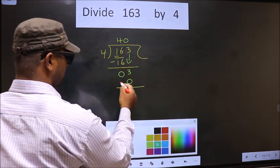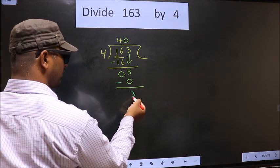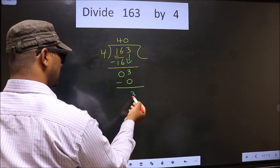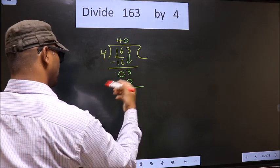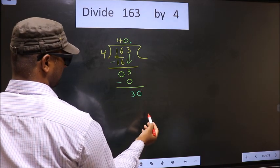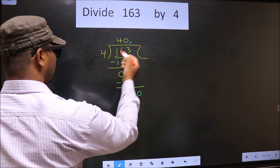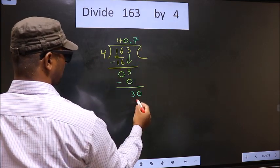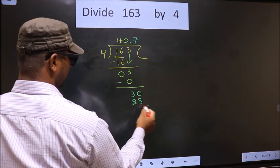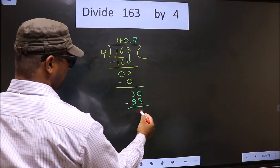Now you subtract. 3 minus 0 is 3. Now here we did not bring any number down, and 3 is smaller than 4. So now we can put a dot and take 0 here. Now here we have 30. A number close to 30 in 4 table is 4 times 7, which is 28. Now you subtract. 30 minus 28 is 2.